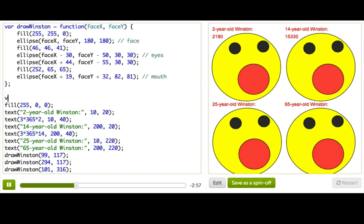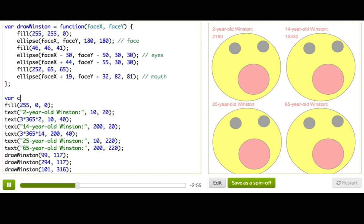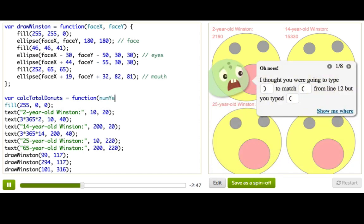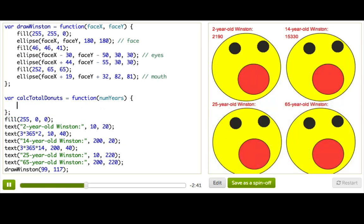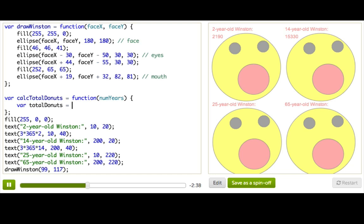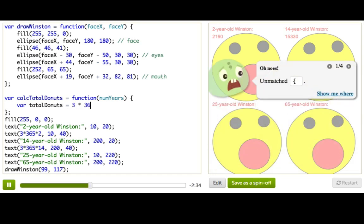I'll define my function up here and call it calcTotalDonuts equals function. And it's going to take one parameter, the number of years, because that's the only thing that we're changing each time we do this calculation. And then inside, we'll do the calculation and save it into a variable.